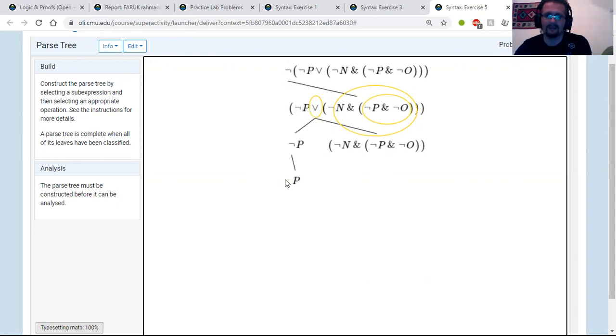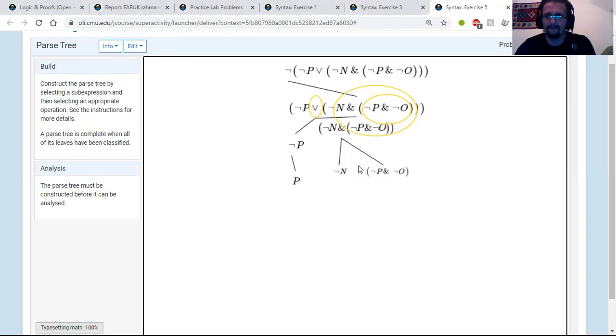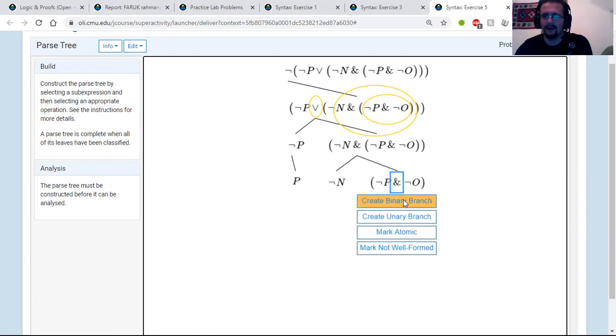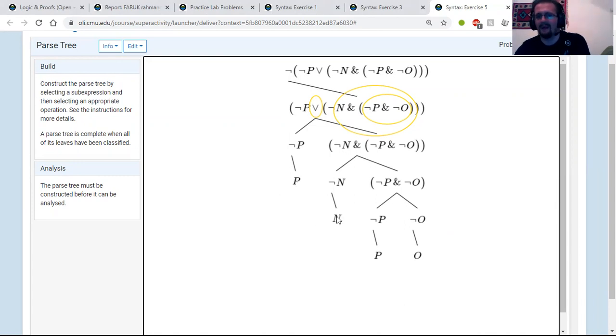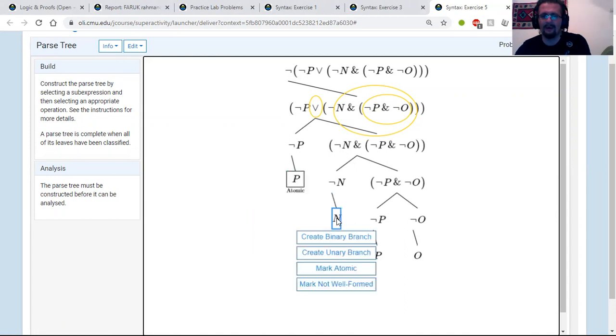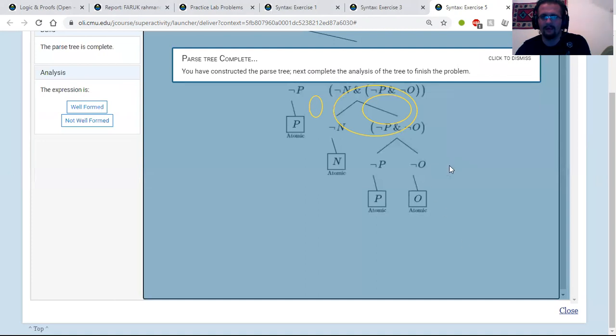All right. So this not P, we can make a unary branch out of that. Now we have an atomic statement over on the right. This conjunction is our next top level function that's going to give us another binary branch, not N on the left and then everything else on the right. All right. And then we have another conjunction here that's also going to give us a binary branch, not P on one side and not O on the other. All right. So we have three negations here. So we're going to need to get rid of those. Let's see if they want us to do this first. Yes, they do. Awesome.